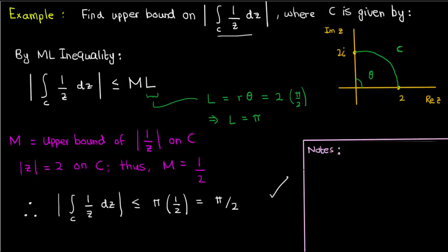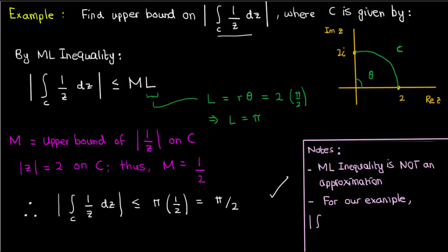A couple of things to mention before ending. First, the ML inequality should not be used to approximate the contour integral's magnitude — it just establishes an upper bound, and that upper bound doesn't have to be close to the actual value. Second, for this example you can actually perform the contour integral and find its magnitude, which turns out to be 1 over the square root of 2, and that is indeed less than the upper bound of π/2 — a verification of the ML inequality.